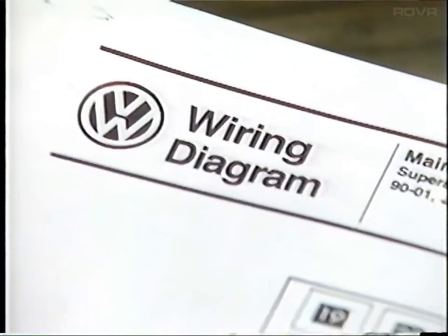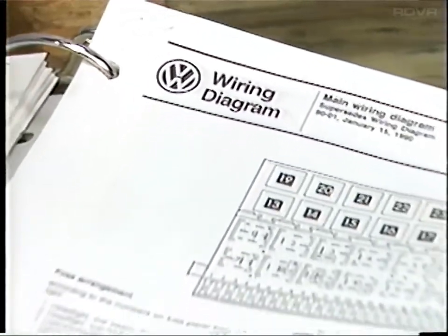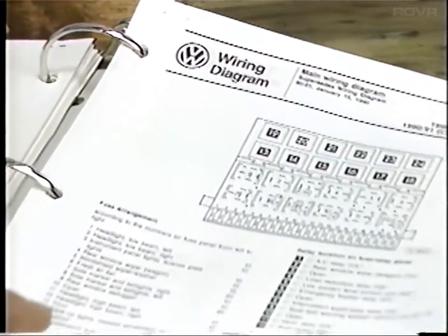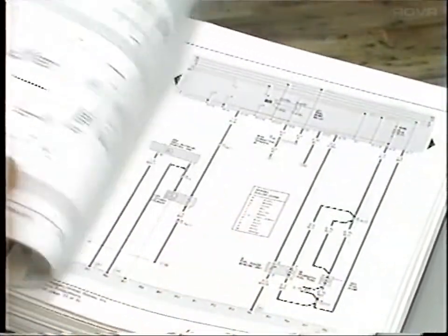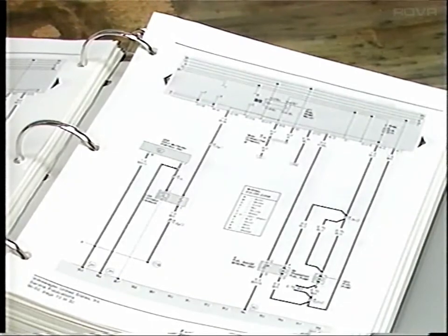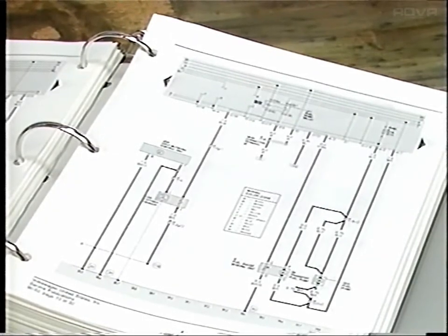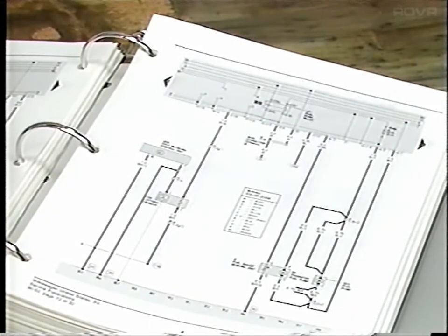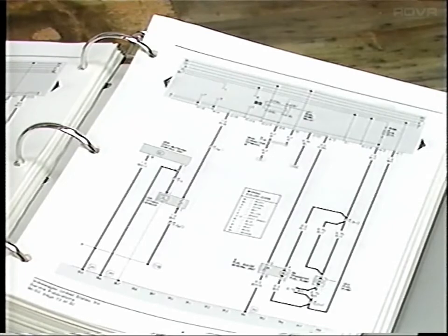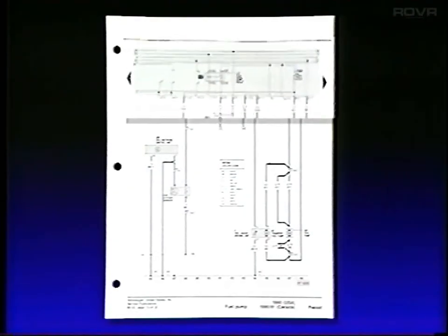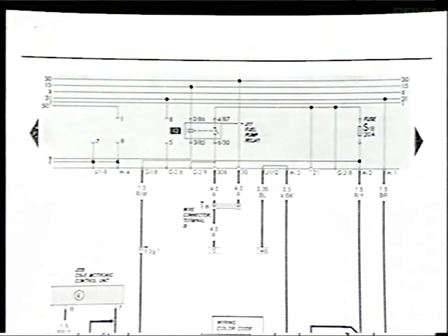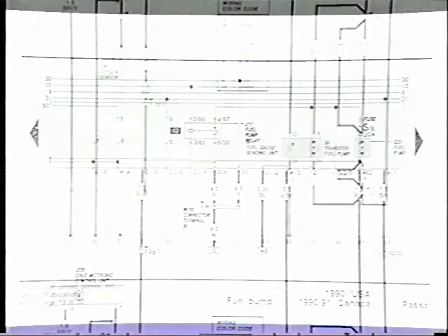Wiring diagrams are also known as current flow diagrams. This is because the components are arranged on the pages of the diagram based on their electrical function and how the current flows, instead of where they are located on the vehicle. In general, the current flow in our wiring diagrams is arranged to flow from the top of the page to the bottom of the page.